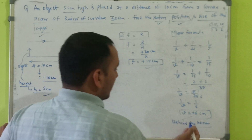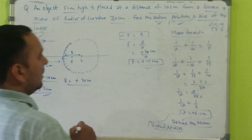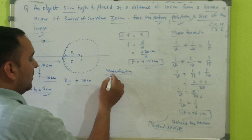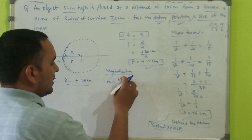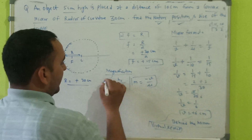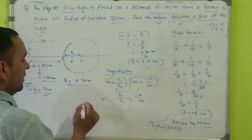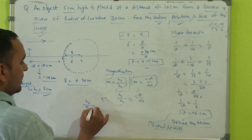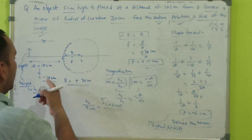The image is forming behind the mirror, so the image will be virtual. Now let us apply the magnification equation. Magnification equals h2 upon h1, which equals image distance upon object distance. For the mirror case, magnification equals minus v upon u. Combining these two equations: h2 upon h1 equals minus v upon u. Putting in the values: h2 upon h1 equals h2 upon 5 centimeters equals minus 6 centimeters divided by minus 10 centimeters.